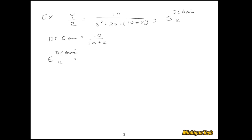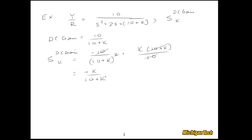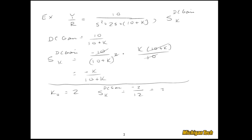Taking the derivative: d(DC gain)/dk is negative 10 over (10 plus k) squared. Multiplying by k over the DC gain — which is (10 plus k) over 10 — and working it all out, we get negative k over (10 plus k). For a nominal controller gain k-zero of 2, the sensitivity of DC gain with respect to k equals negative 2 over 12, which is about negative 0.17.